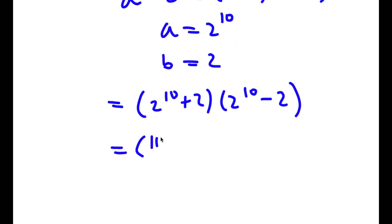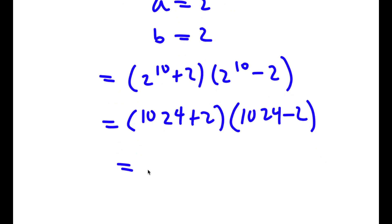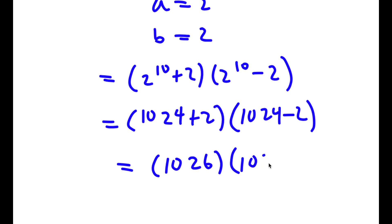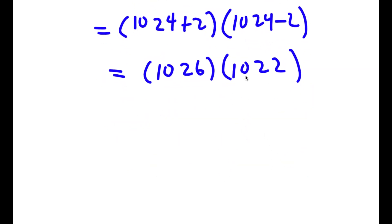Now 2 to the power of 10 is 1024. So I have 1024 plus 2 times 1024 minus 2. 1024 plus 2 is 1026, and 1024 minus 2 is 1022. So now we have 1026 times 1022. If we try to multiply these terms as is, it's going to take really long and it's very easy to make mistakes.